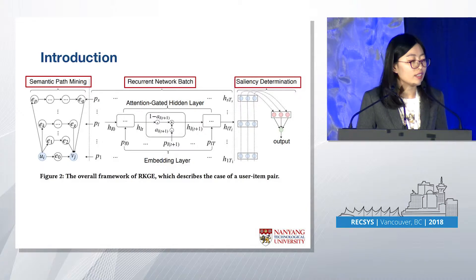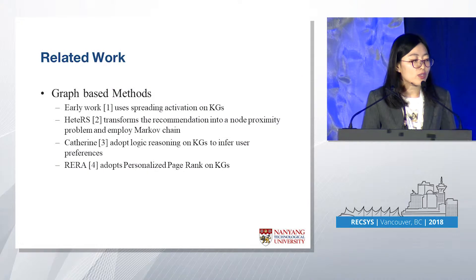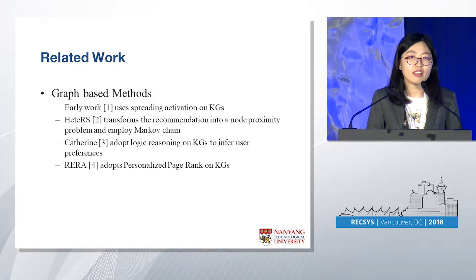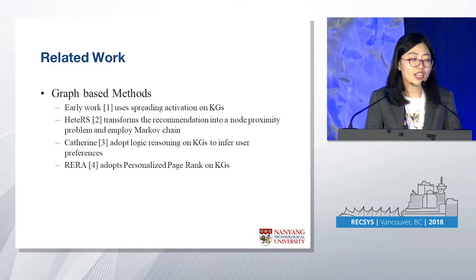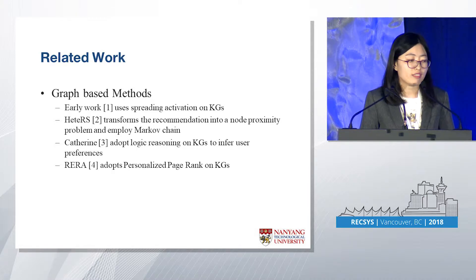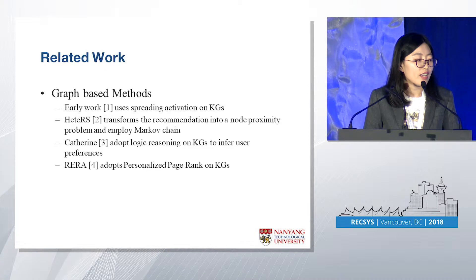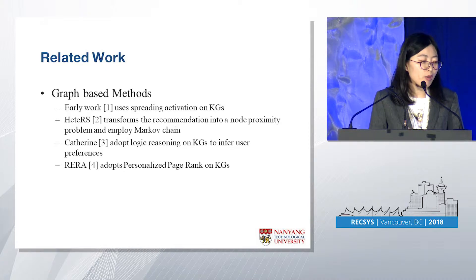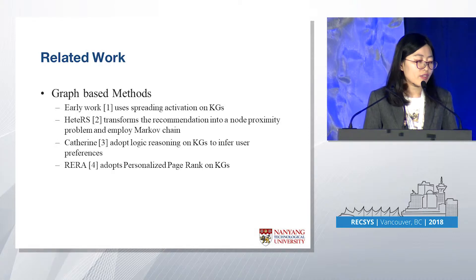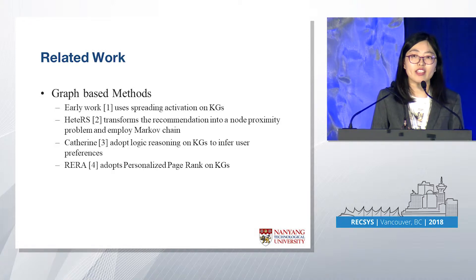Now I will introduce some related works. There are many works that leverage knowledge graphs to improve the performance of recommendation. They can be generally classified into three types: graph-based method, metapath-based method, and graph embedding-based method. For the graph-based method, they are normally based on a random walk process, which is very easily biased to popular and central entities in the knowledge graph. Besides, they only consider the topological structures of the knowledge graph and ignore the semantic information encoded in it.